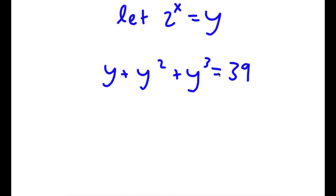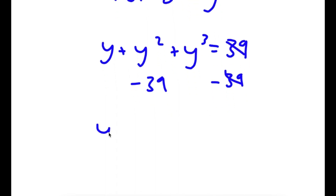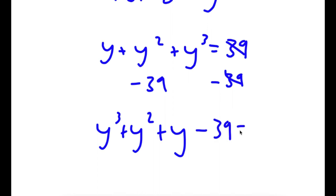So now I have y plus y squared plus y to the power of 3 is equal to 39. I'm going to subtract 39 on both sides, and now I have y to the power of 3 plus y to the power of 2 plus y minus 39 is equal to 0.